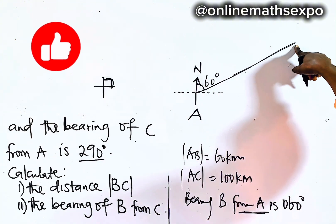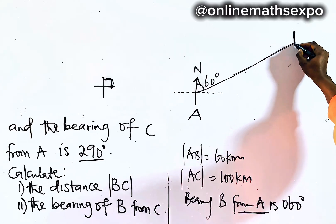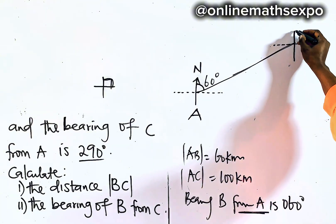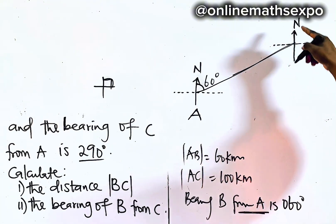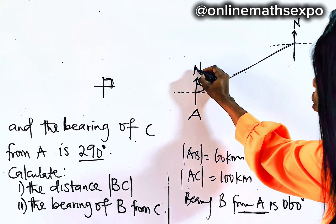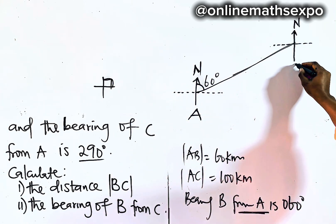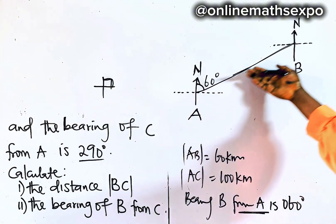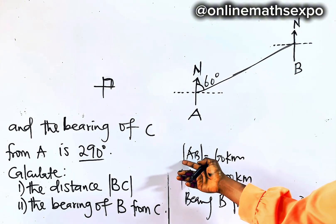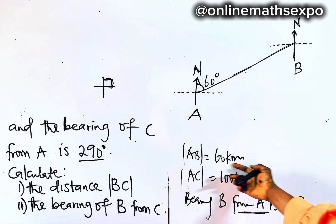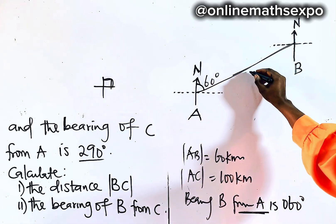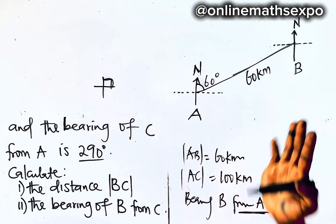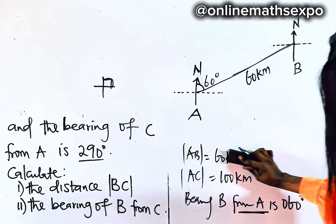When you stop, introduce another cardinal point. You can use a broken line or complete it — but you must remember to put the north pole. This is where I stopped, and this is the point B. So this is the bearing of B from A. From here to here gives us a distance of 60 kilometers. Labeling the diagram is very important.